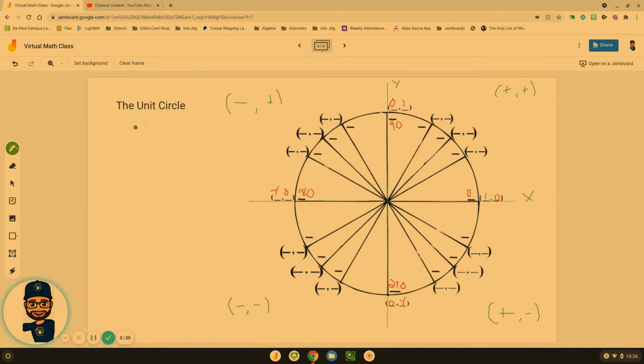Don't forget on the unit circle, we're going to have cosine and sine. Which hopefully you remember that it's cosine. Just think of the alphabet. C comes before S. So cosine comes before sine in the ordered pair.